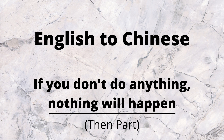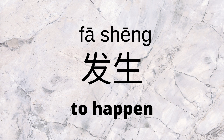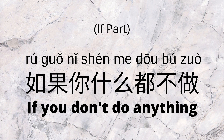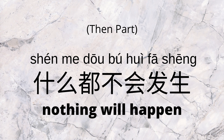For the then-part, 'nothing will happen' uses the same pattern we just went over: 什么都 followed by a negative verb. For the verb 'to happen', we can use 发生. So 'nothing will happen' is 什么都不会发生. Then we can combine the two parts to get our answer: 如果你什么都不做，什么都不会发生.